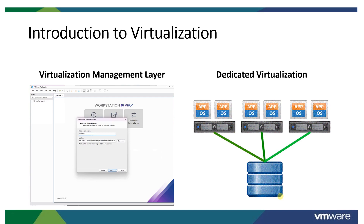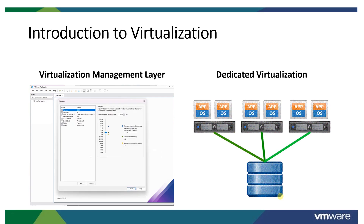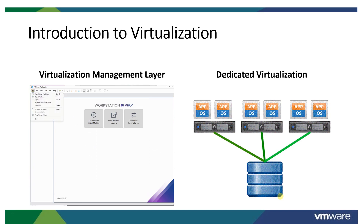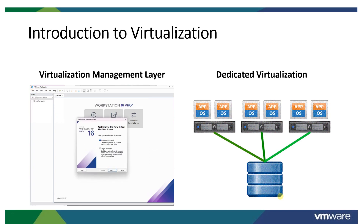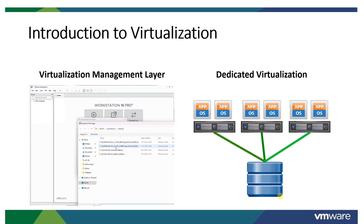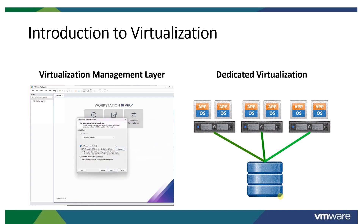ESXi is a very robust and reliable operating system. Similar to installing Windows or Linux using a bootable ISO image, we can also install ESXi on hardware. You need a bootable USB, put it in the USB slot of your high-end hardware, and boot from the ISO image of ESXi. Such an installation is also known as bare metal installation.